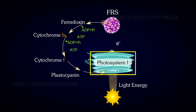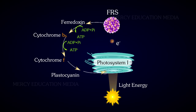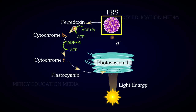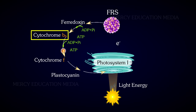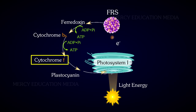When the molecule in PS1 is excited, the electrons are released. The electrons are captured by ferredoxin through the ferredoxin reducing substrate, i.e., FRS. Due to the non-availability of NADP+, electrons from ferredoxin fall back to the molecules of PS1 through the electron carriers cytochrome B6, cytochrome F, and plastocyanin.